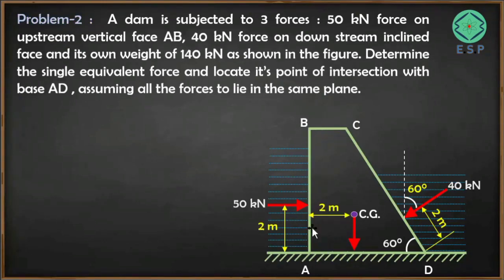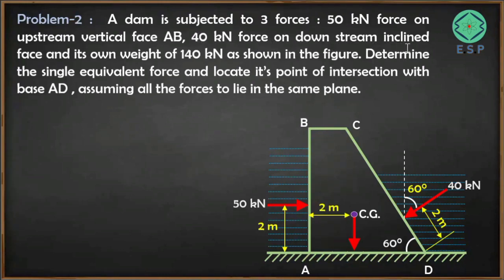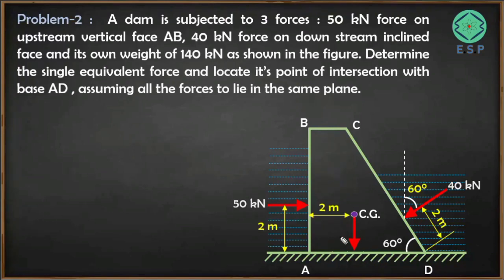Looking at the figure, points A, B, C, D represent the dam. There is a vertical face and an inclined face. The 50 kN force acts on the upstream vertical face AB, the 40 kN force acts on the downstream inclined face CD due to water pressure, and the weight of the dam is 140 kN acting downward.